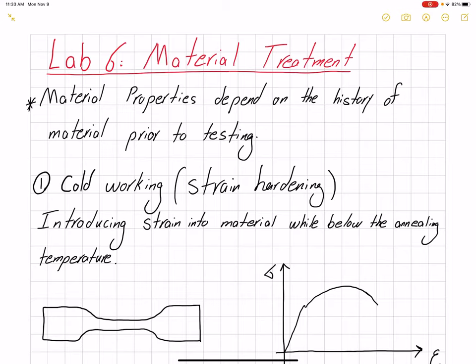In this video we are going to talk about material treatment. Material properties not only depend on the composition of the material but also the treatment the material has experienced — so the history of the material is very important. When we had in-person classes, I used to bring two aluminum rods with different heat treatments: one was very easy to bend, the other was almost impossible to bend. Same alloy, same composition, but just because of the treatment, the material property can be vastly different.